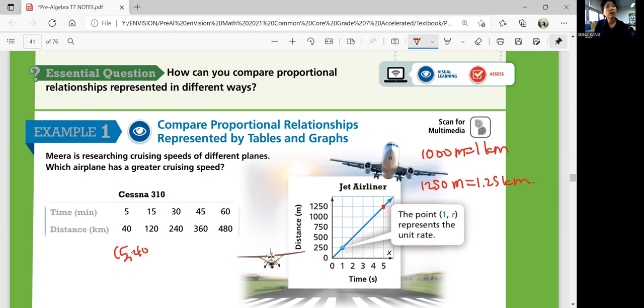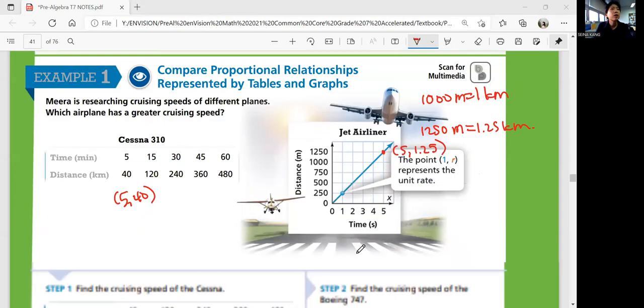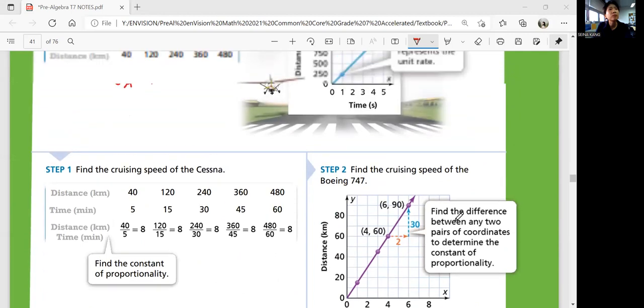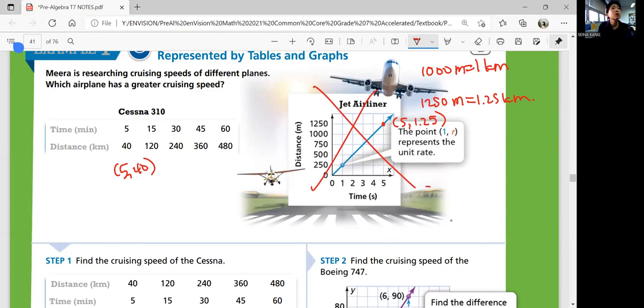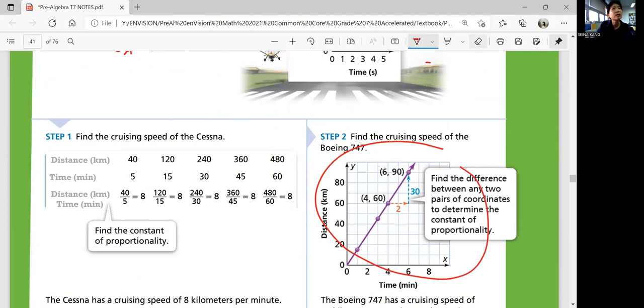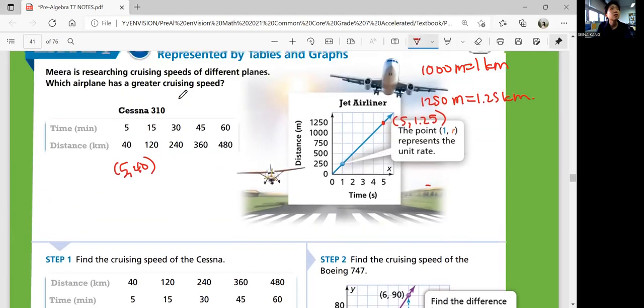So basically, pick a point. 5 comma 40 says for Cessna, right? That means jet has 5 comma 1.25 kilometers. Is that right? I think the graph is wrong, right? Look at step two. The graph is wrong here. So let's not use this graph. I think you can just use that to represent the point. I don't think this is the graph we're using. I don't know where this graph came from. But I guess this is the graph for the flight we're looking for.